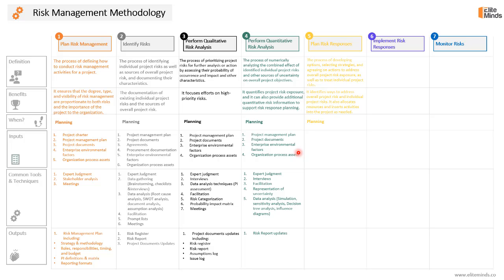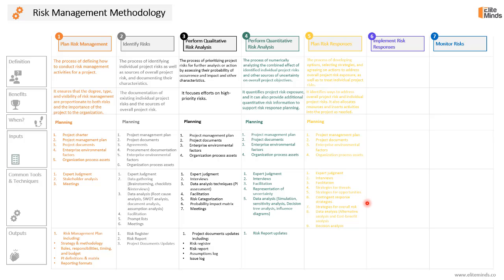Plan risk responses is the last risk management process in the planning phase. We will use the project management plan — specifically the risk management plan — as an input. We will also use project documents like the lessons learned register, project schedule, risk register, risk report, and stakeholder register, along with enterprise environmental factors and organizational process assets. Tools and techniques include expert judgment, data gathering techniques like interviews, interpersonal and team skills like facilitation, and best practices and strategies to deal with threats, opportunities, and the overall project risk.